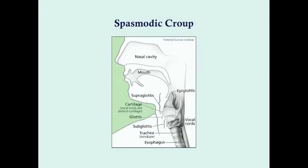Looking at the airway: you have the mouth, then the laryngopharynx, the epiglottis, the larynx, and the vocal cords. The subglottis and the trachea are going to be the areas most affected in croup and spasmodic croup. Importantly, spasmodic croup does not have quite the same degree of inflammation that we see in viral croup.